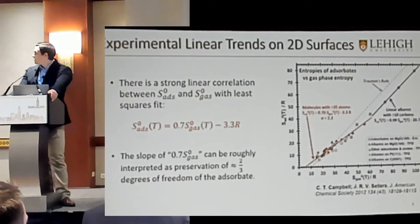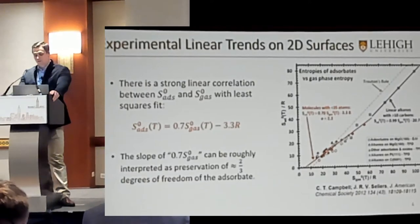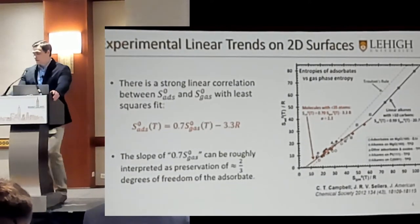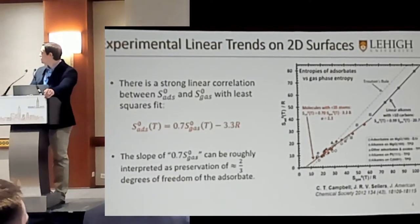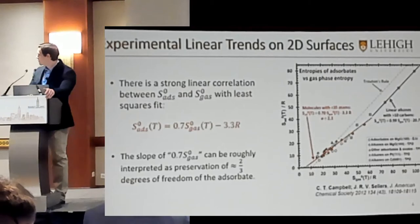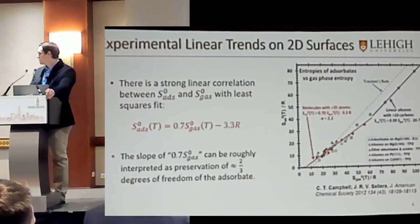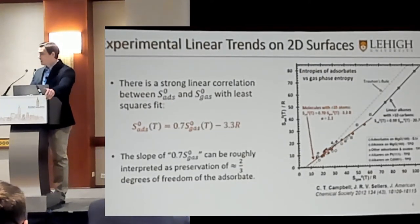Looking at correlations of the adsorption entropy goes back a few years with some notable papers. For example, Campbell and Sellers compiled a series of experimentally determined adsorption entropies for alkanes and alcohols on two-dimensional catalytic surfaces. What they found is that when they plotted these entropy values on the y-axis against each molecule's respective gas phase entropy on the x-axis, they got a very nice linear correlation.